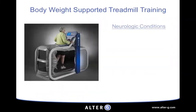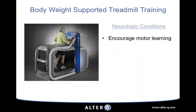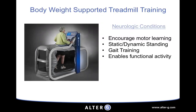Body weight supported treadmill training is a modality that really helps neurological patients with repetition and motor learning because they can get mass practice of walking. Patients that aren't comfortable, don't have good balance, or are deconditioned benefit from harness support and body weight support that gives them confidence. They can work on static or dynamic balance, gait pattern, and functional activity. The challenge with many body weight support modalities is comfort — harnesses can pull on the skin and pinch, so patients don't want to be on them long. The anti-gravity treadmill provides much more comfort through special shorts.